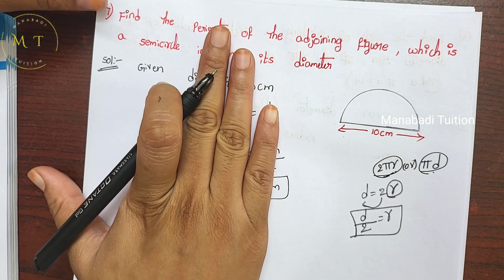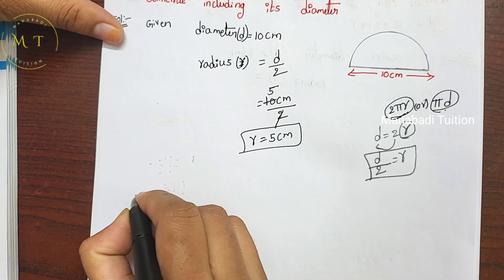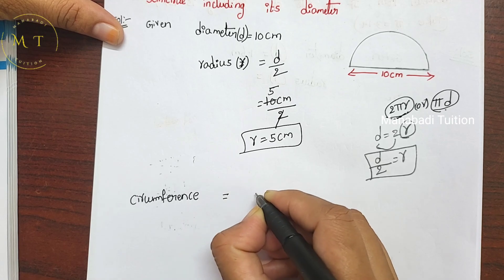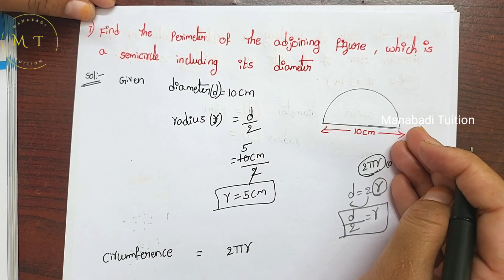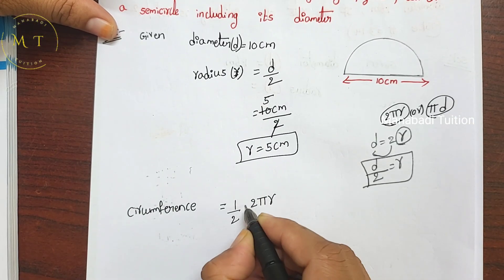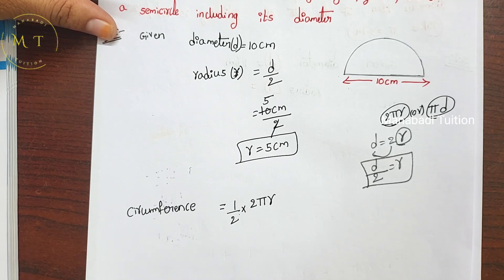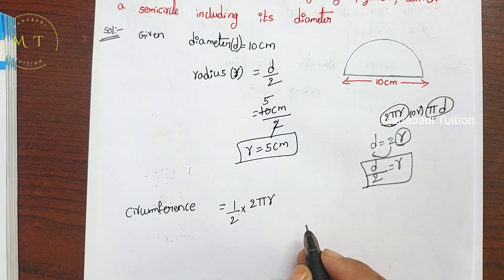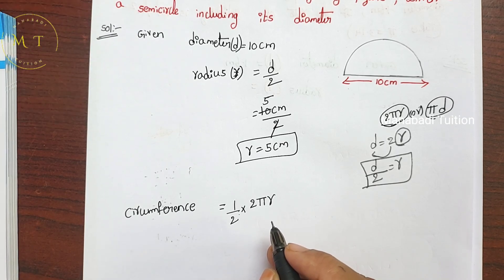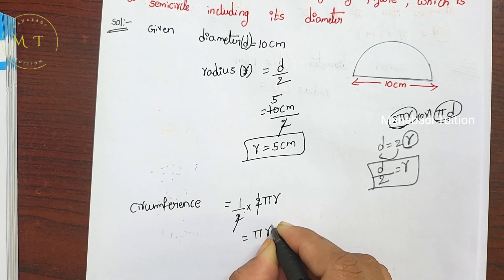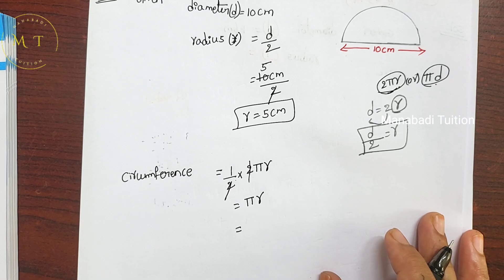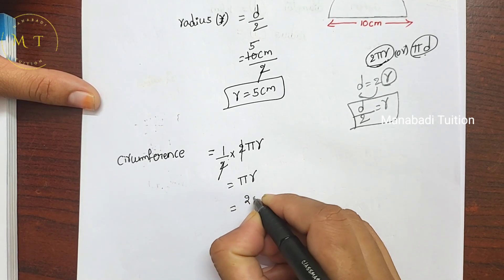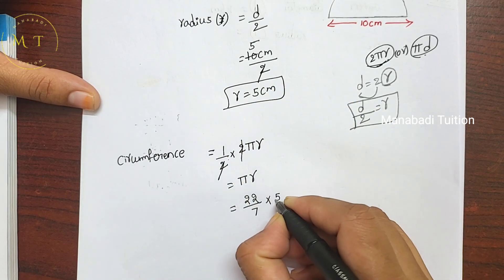Now we have the perimeter, which is the circumference of the circle. The circumference formula is 2πr. But we don't have a full circle — we have a semicircle. So the formula becomes 2πr divided by 2, which simplifies to πr. Pi value is 22 by 7, and radius is 5 centimeters. So we calculate 22 by 7 multiplied by 5.